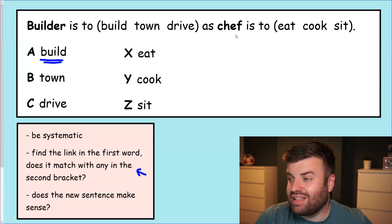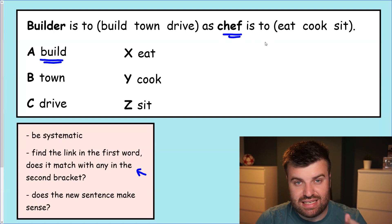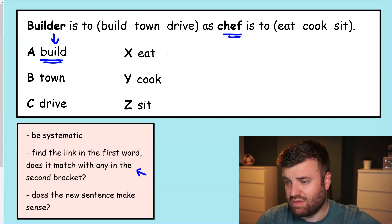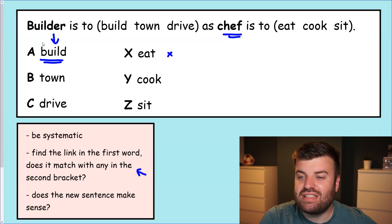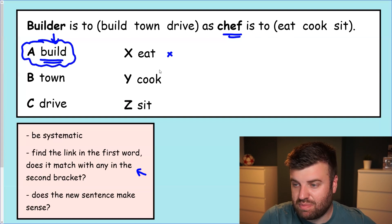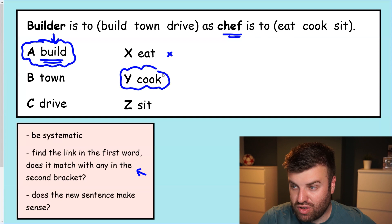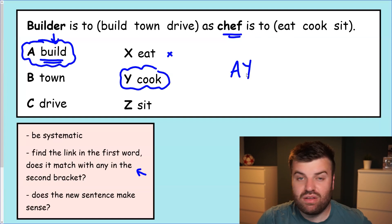So we're going to now take a look at the second word here which is chef and the second set of brackets. Are there any words that go together in the same way? So a builder builds for his job. What does a chef do for their job? Yeah, they cook, right? They make food. Is that one of the answers here? A chef is to eat? No. They might eat but it's not part of their job to eat. So it's not going to be eat. Cook? Well yes, that's the answer isn't it? Chefs cook for their job. So this is the verb, the thing that the profession does. A builder builds and a chef cooks. So the answer to this question would be A, Y.